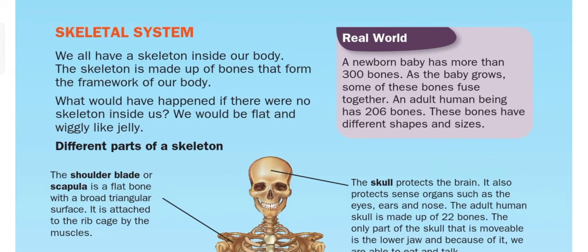What is the skeletal system? We all have a skeleton inside our body and the skeleton is made up of bones that form the framework of our body. The skeleton gives our body shape. Without it, our body would be a flat, wiggly, jelly-like structure — just a piece of flesh. We have a proper body shape because of the skeletal system.